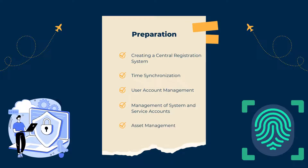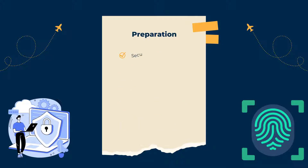Asset management: Instant access to information such as devices, operating systems, patch versions, and critical status should be available. Secure communication: If necessary, the team may need to communicate independently of the internal network; for such cases, mobile phone or secondary emails can be used. Legal transactions: The method of who will initiate the judicial process and in which situations should be determined before the incident occurs.